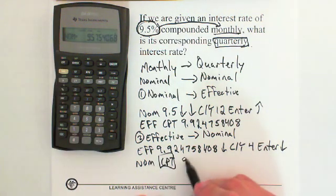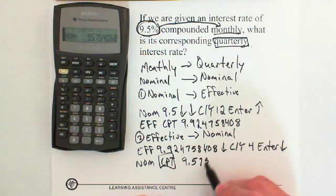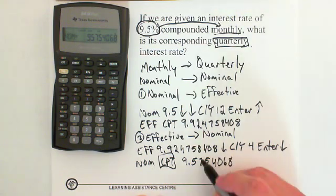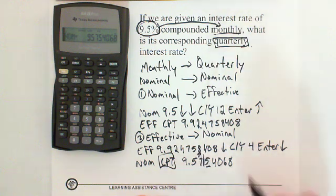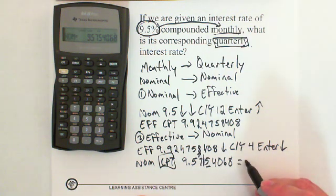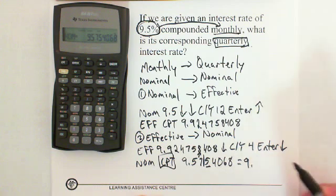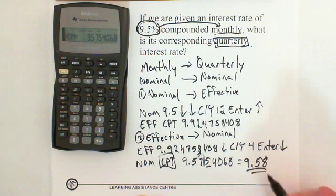We get 9.5754068. Rounding to two decimal places — because this is a 5, it causes the 7 to round up, just like in the first question. So the final answer is 9.58.